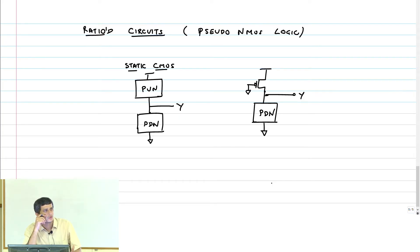No, it cannot go all the way to 0 because I have a fighting between the PMOS transistor and the NMOS stack. So therefore, the output VOL is going to be greater than 0 in this pseudo NMOS logic. We will first calculate what that is. So let us consider a pseudo NMOS inverter.